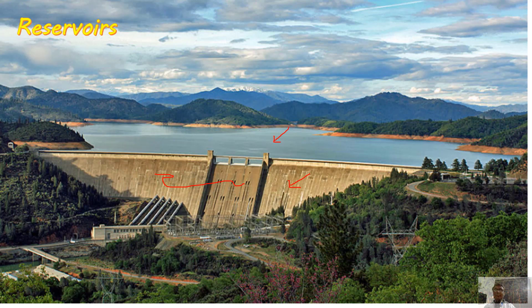To control the water from the reservoir out into the downstream of the dam, we have gates. These are the gates. And here, these are turbines for hydroelectric power, which we will see later in this lecture.